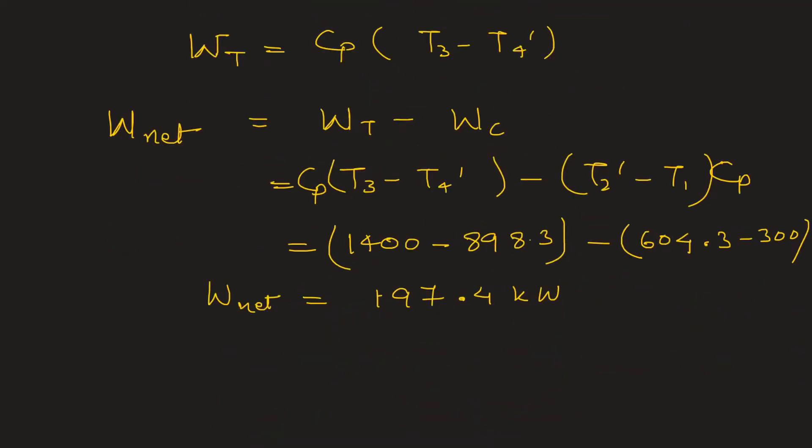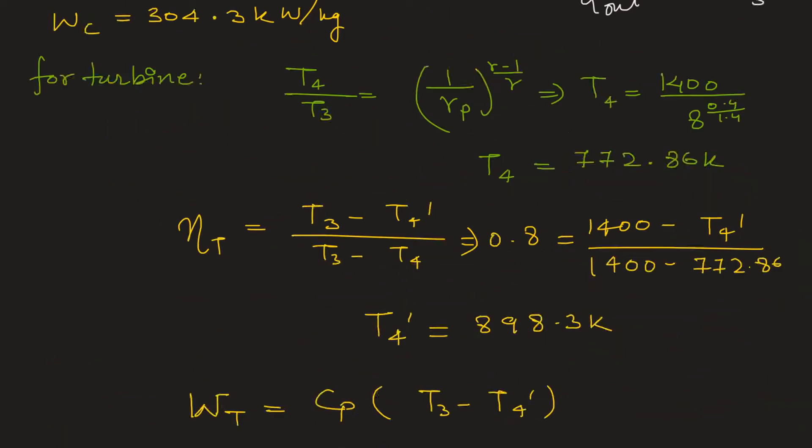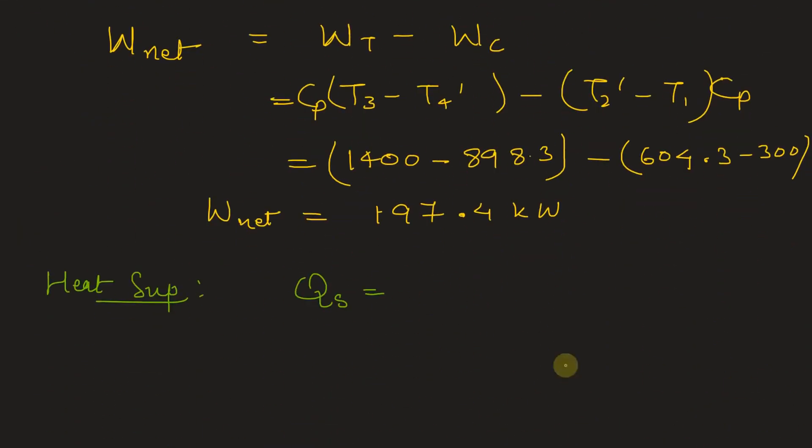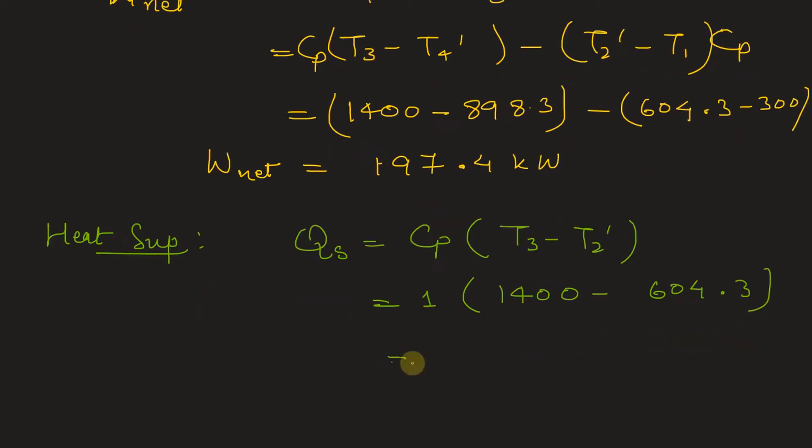Now let's find out the heat supplied in the system. So heat supplied, Qs will be equal to, now heat is added between two dash and three at constant pressure. So this is Cp T3 minus T2 dash. So Cp is 1, T3 is 1400 minus T2 is 604.3, T2 dash. So this value will be, heat supplied will be equal to 795.7 kilowatt.